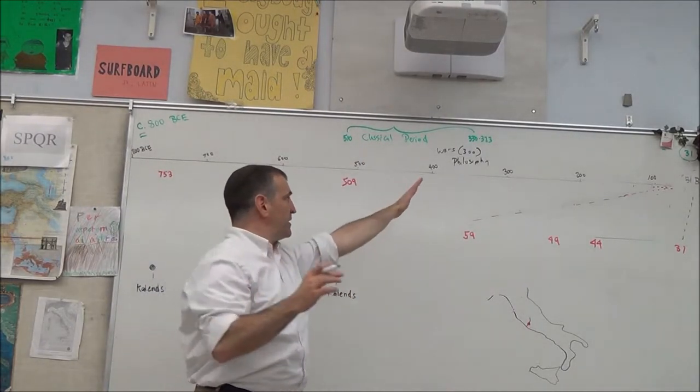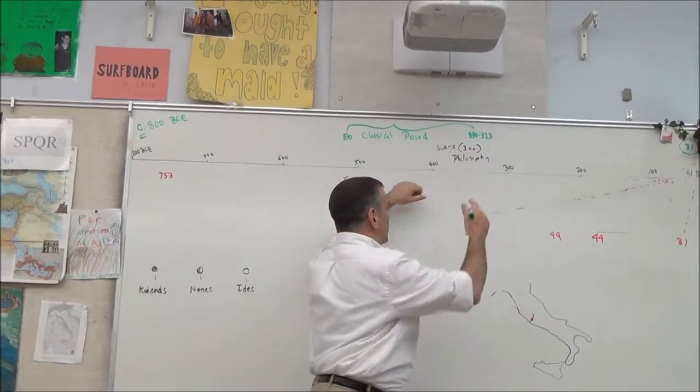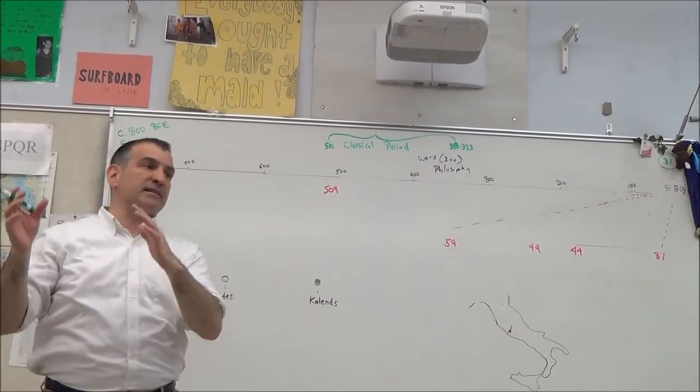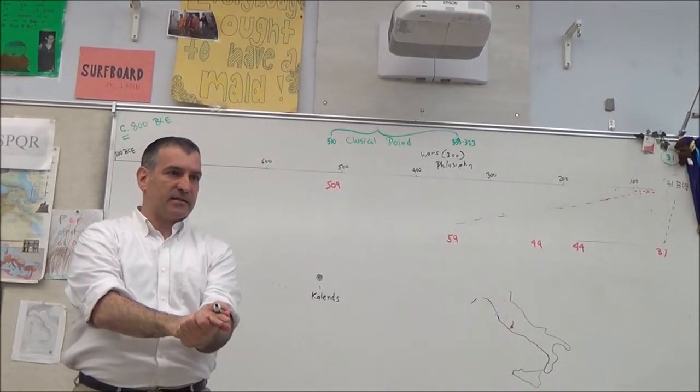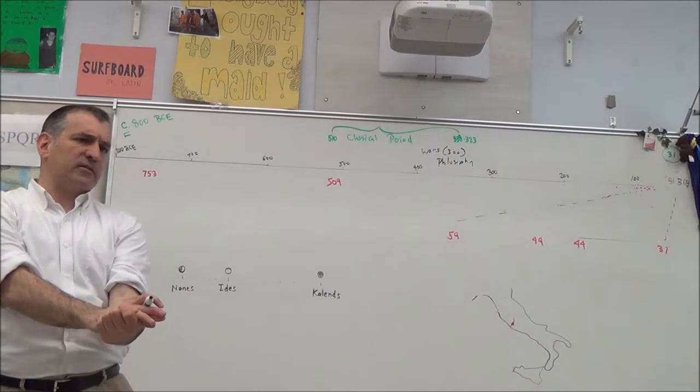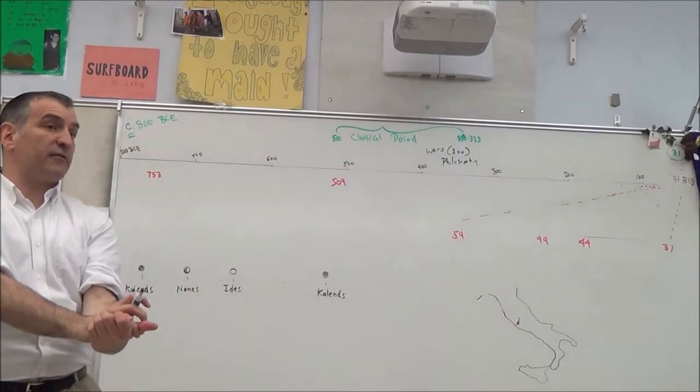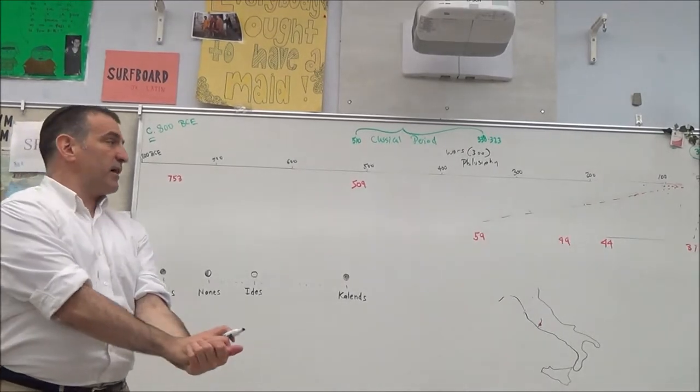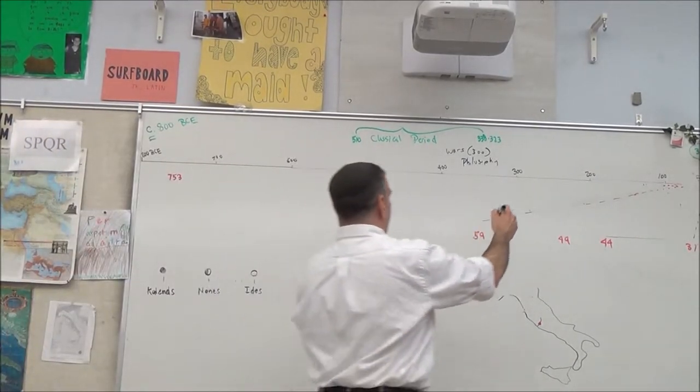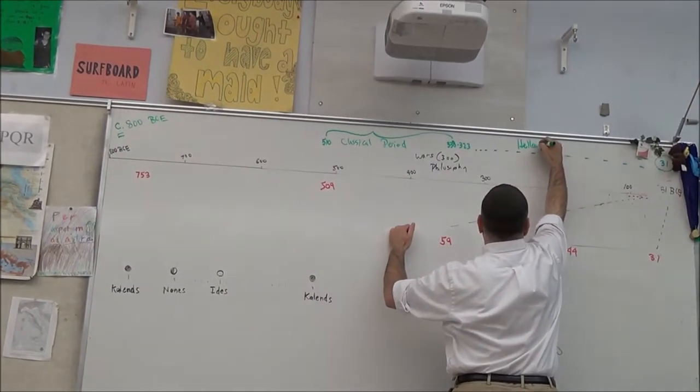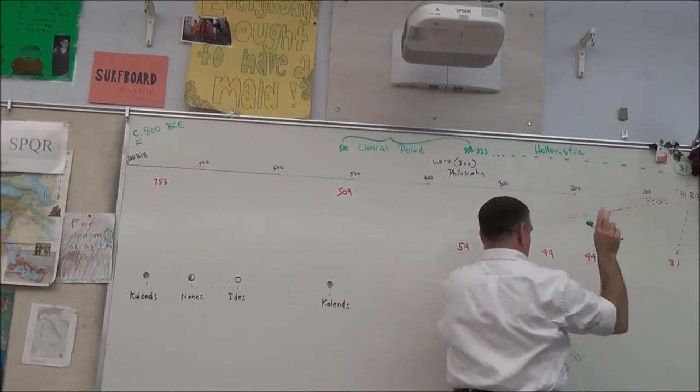Okay, that period comes to an end either in 338 or 323, depending on how you want to count it. 338 is when Philip of Macedon defeats the Greek city-states, so the Greek city-states are no longer free. So that's a good time to end it. Most people end the Greek period with 323, the death of Alexander the Great. After Alexander the Great dies, you no longer have the Greek period, but you have the Hellenistic period, which is Greek-ish.